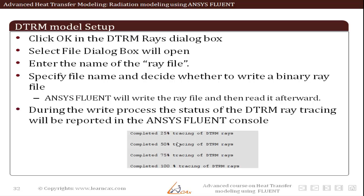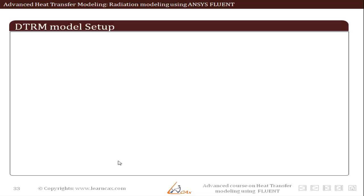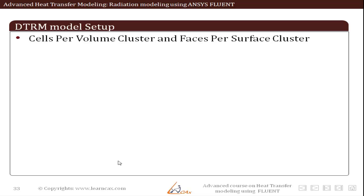During the writing process, the status of the DTRM ray tracing will be reported in the ANSYS Fluent console as shown. Now, DTRM works on the principle that we convert the total region of radiation into smaller solid angle sectors and a ray is emitted from each such sector. We can further make groups of cell volumes and surface areas in order to reduce the computational effort required.